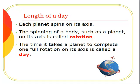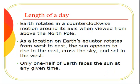The time it takes a planet to complete one full rotation on its axis is called a day. Earth rotates in a counter-clockwise motion around its axis when viewed from above the North Pole. As a location on Earth's equator rotates from west to east, the Sun appears to rise in the east, cross the sky, and set in the west.